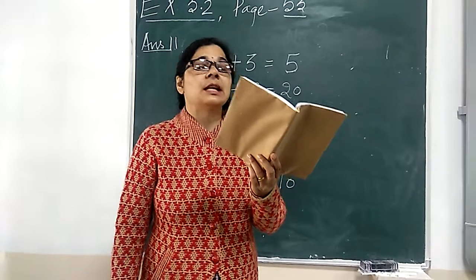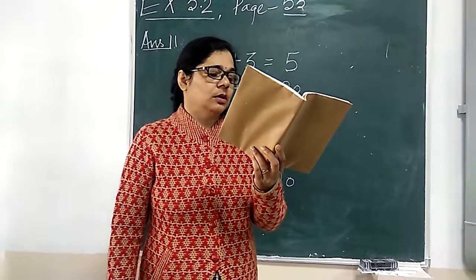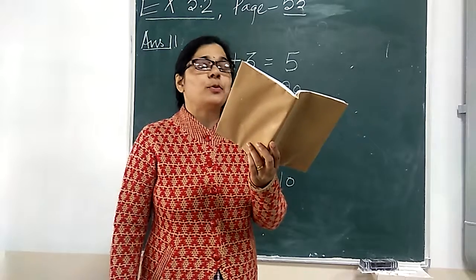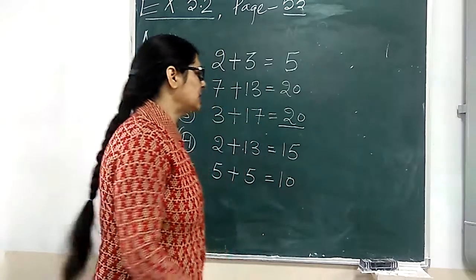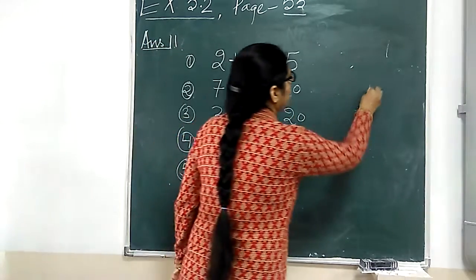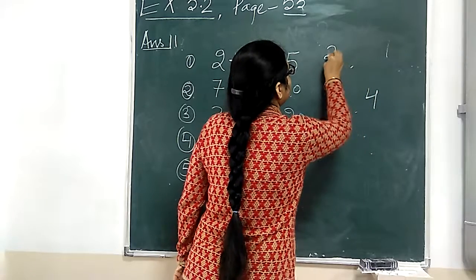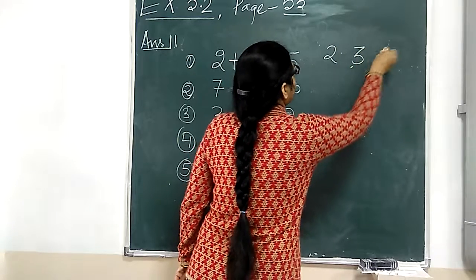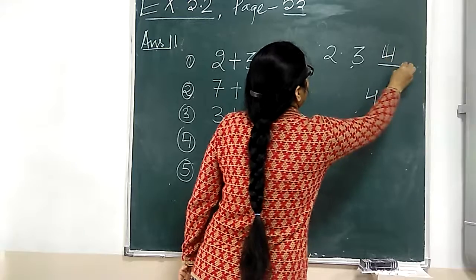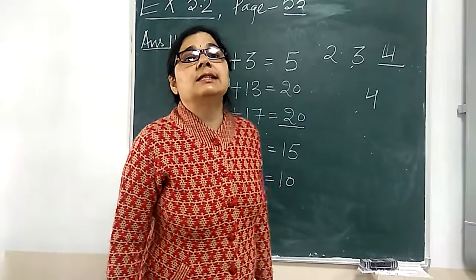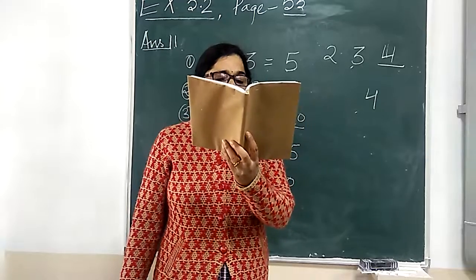Now, the smallest composite number is 4. See, 2 is a prime number, 3 is a prime number, then 4 is a composite number. So, 4 is the smallest composite number.